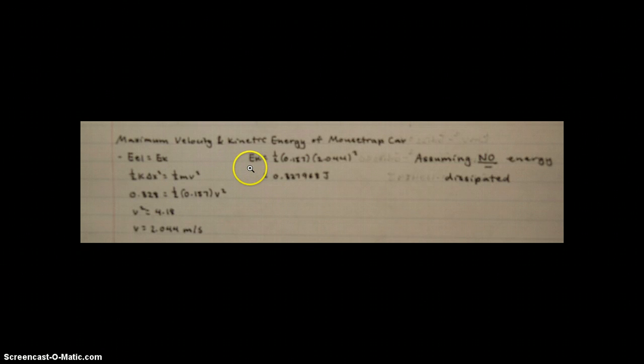In order to find the maximum kinetic energy, we just use this formula, 0.5 mv squared, and plug in mass and the velocity we found here to obtain an energy value of 0.328 joules, which is about the same max as the previous elastic energy.